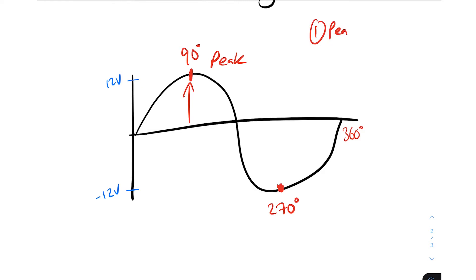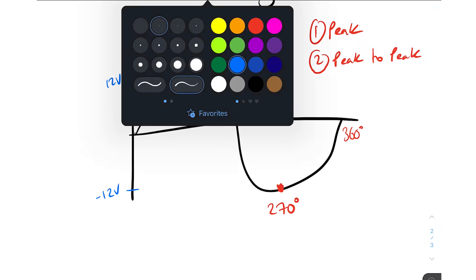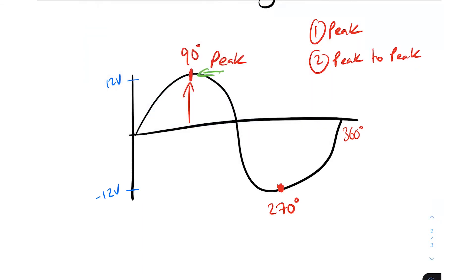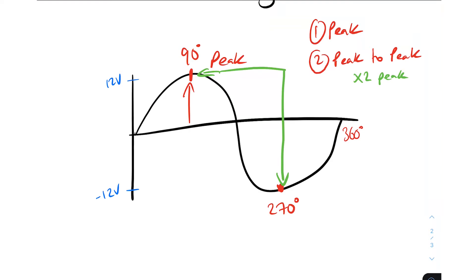Next is peak-to-peak. The peak-to-peak is the value from 90 degrees all the way down to 270 degrees. You can always be sure that the peak-to-peak is two times the peak, because sine waves are symmetrical across the zero axis. So wherever the peak is, the peak-to-peak value is going to be two times that. In this instance, the peak value is 12 volts, so the peak-to-peak value will be 24 volts.